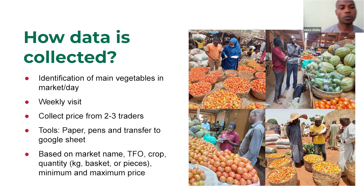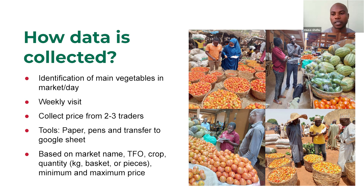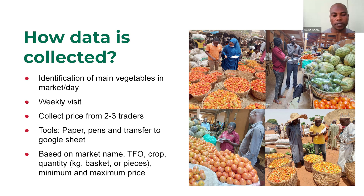How do we collect this data? First, we identify the main vegetable markets and the market day. Here in Africa, some markets are weekly, some at an interval of some days, while some are daily. The field officer visits the market weekly to collect prices from two to three traders. This information is recorded on paper and transferred to Google Sheet. The Google Sheet is designed with the market name, the TFO collecting the information, the various crops, the quantity, the unit — kg, basket, or pieces — and the minimum and maximum price of that market. You can see from these photos our field staff from various locations interacting with traders and collecting the information.